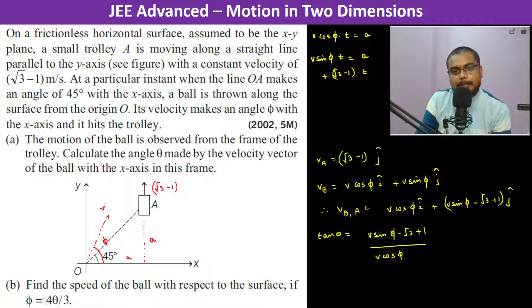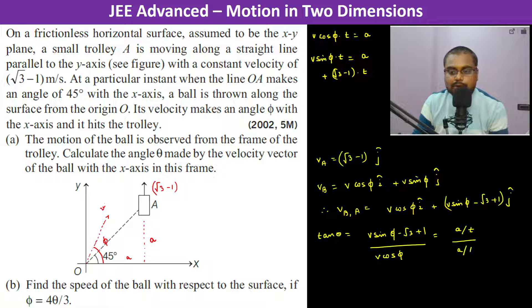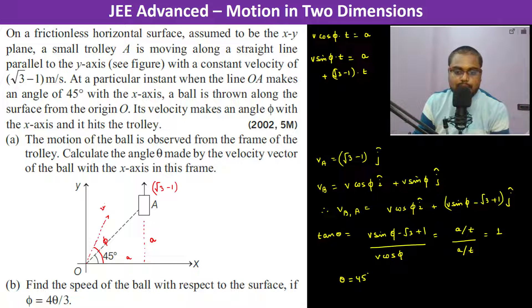From these equations: v·sinφ − (√3 − 1) = a/t and v·cosφ = a/t. Therefore the ratio is 1, which means tan θ = 1, so θ = 45 degrees.